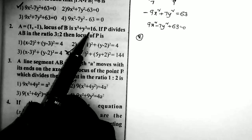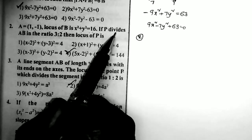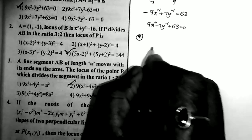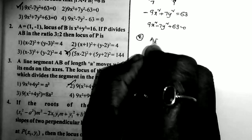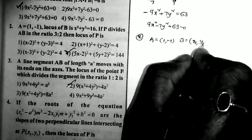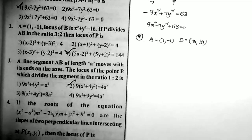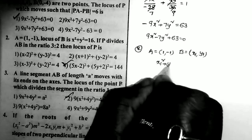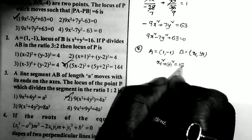Second problem: If A = (1, -1) and the locus of B is x² + y² = 16, and the point P divides AB in the ratio 3:2, then what is the locus of P? Here one point is given: A = (1, -1). The locus of B is x² + y² = 16. If we suppose B = (x₁, y₁), then since this is the locus of point B, x₁² + y₁² = 16.